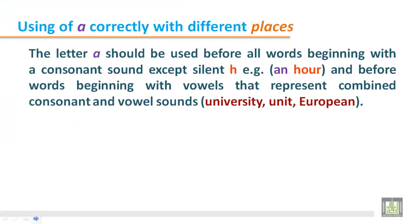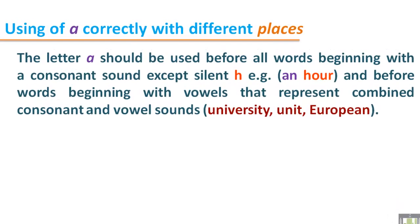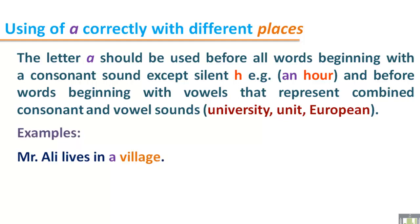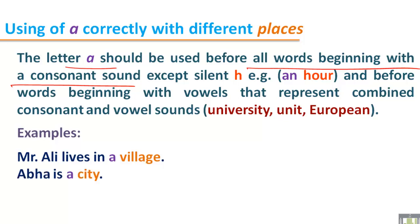Using 'a' correctly with different places. The letter 'a' should be used before all words beginning with a consonant sound, except silent h. For example: 'an hour'. Also before words that begin with vowels representing combined consonant and vowel sounds, such as in 'university', 'unit', 'European'. Examples: 'Mr. Ali lives in a village' — village begins with the consonant V, so we use 'a'. Also: 'Abha is a city' — the word begins with C, so we use 'a'.